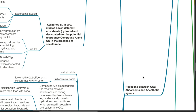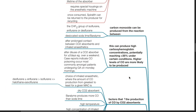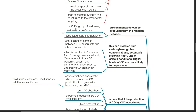Reactions between CO2 absorbents and anesthetic agents. Carbon monoxide can be produced from the reaction between the CHF2 group of isoflurane, enflurane, or desflurane with desiccated soda lime or baralime. This can produce high carboxyhemoglobin concentrations, potentially reaching up to 35% under certain conditions. Higher levels of carbon monoxide are more likely to be produced after prolonged contact between CO2 absorbents and inhaled anesthetics, and after disuse of a CO2 absorber for 2 days or more, for example over a weekend. Case reports indicate carbon monoxide poisoning occurs most commonly among patients undergoing general anesthesia on Monday mornings.